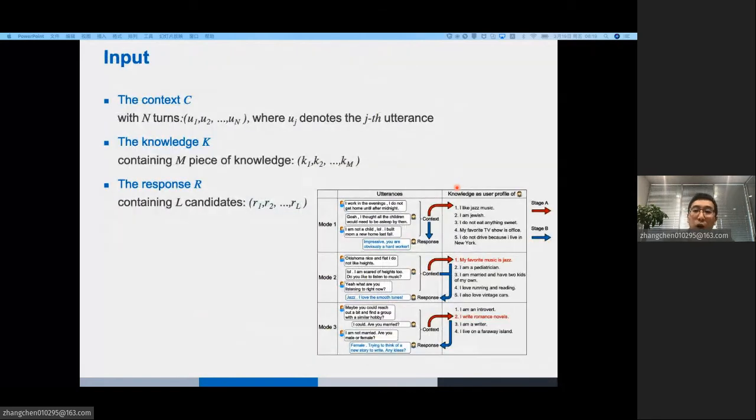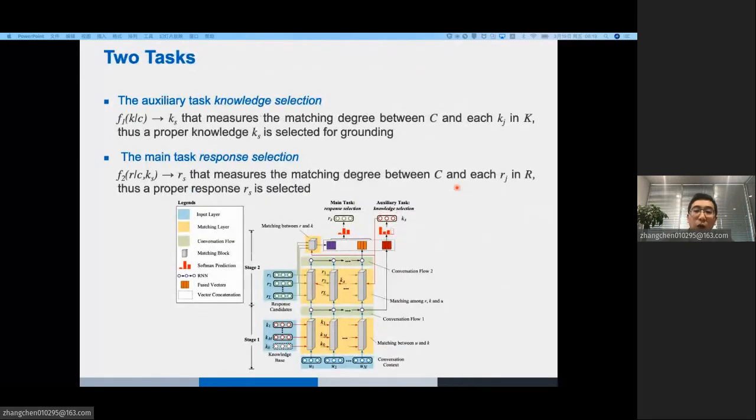This is the whole framework. Before we dive into the details of our model, let me introduce the input. We have three inputs. The context C, the knowledge K, and the response R. Then, we assign two tasks to learn. Knowledge selection as a secondary task, and the response selection as a main task. In knowledge selection, we learn F1 formula that measures the matching degree between C and K. Thus, a proper knowledge KS with the maximum matching degree is selected. In the response selection, we learn the function F2 that measures the matching degree between C and R, given KS. Finally, a proper response called RS is selected.